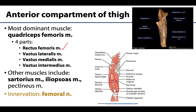The other three parts are the vasti muscles: the vastus lateralis, which is actually the largest; the vastus medialis — one more lateral, one more medial as you'd expect; and the vastus intermedius, which is deep to the rectus femoris, as seen in this image after the rectus femoris has been removed. Together, the quadriceps femoris dominates the anterior compartment and takes up almost all of the view.